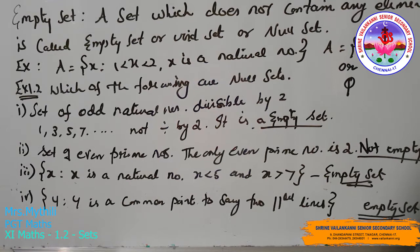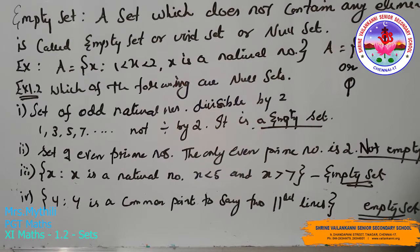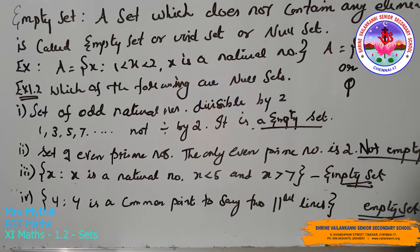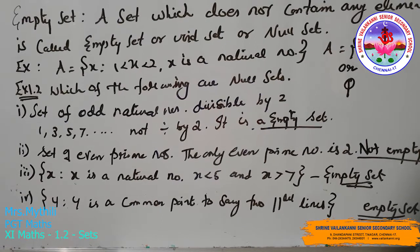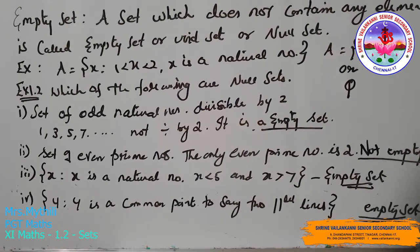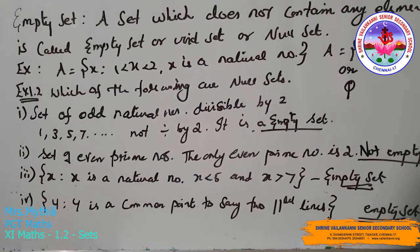Let's see an example. The set of all x such that x lies between one and two, where x is a natural number. We know that there is no natural number between one and two, so it is an empty set, and A is denoted by empty braces.